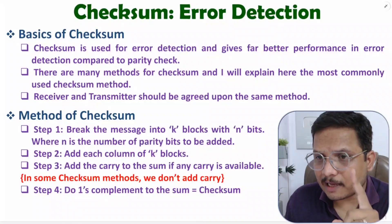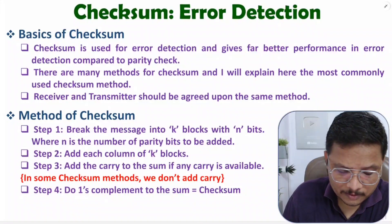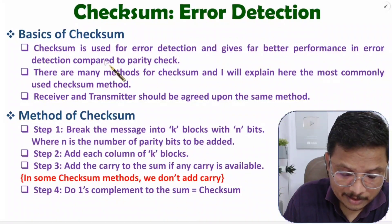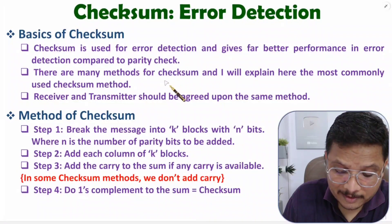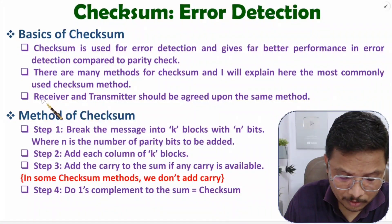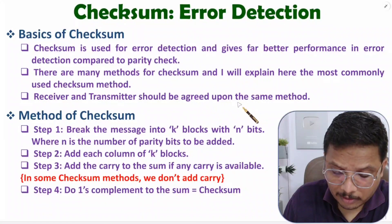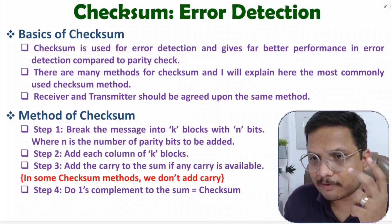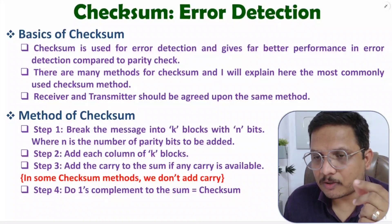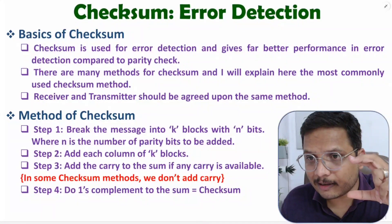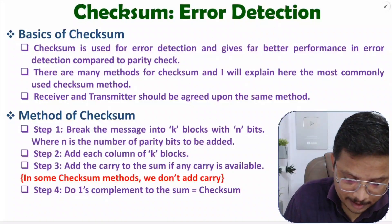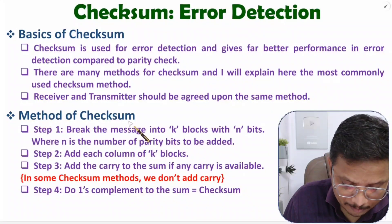Checksum gives far better performance in error detection compared to parity check. There are many methods available for checksum, and in this video I'll be explaining the most commonly used one. One important thing: transmitter and receiver both should agree upon the same method, because varieties of methods are available. So when the transmitter is sending a frame using checksum, the receiver should also be using the same checksum method.